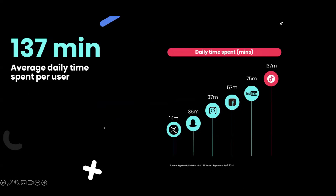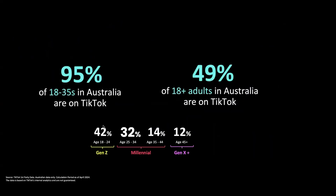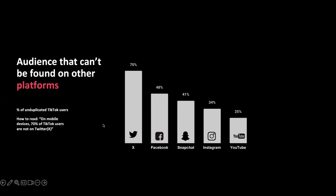When it comes to average time spent on TikTok, users are spending a movie's length of time on TikTok every day - considerably more than any other platform, with our closest competitor being YouTube. Looking at just the 18 to 35-year-old population in Australia, 95% of them are on TikTok, which works out to virtually half of all adults in Australia. Just over 40% of users are between 18 to 24 (Gen Z), but 60% are over the age of 25, and over a quarter of TikTok users are above 35. The average age on TikTok in Australia is 32. Additionally, 34% of TikTok users aren't on Instagram, and 48% aren't on Facebook.